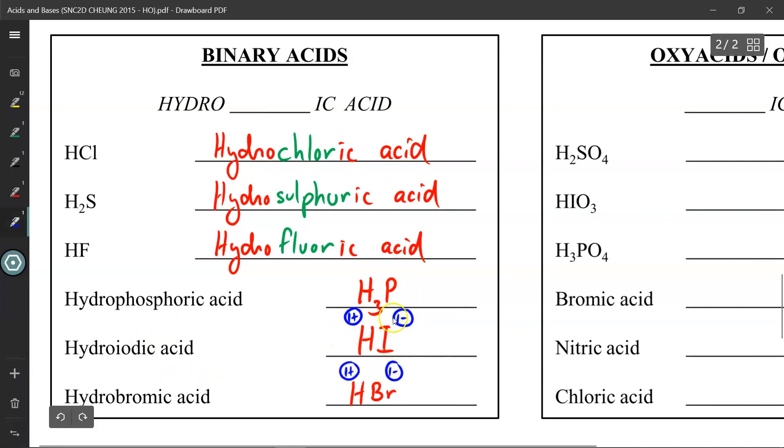For these other two, they all only have a valence charge of 1 minus, so it's already zero-sum, no need for any subscripts. Hydroiodic acid is HI, and hydrobromic acid is HBr.